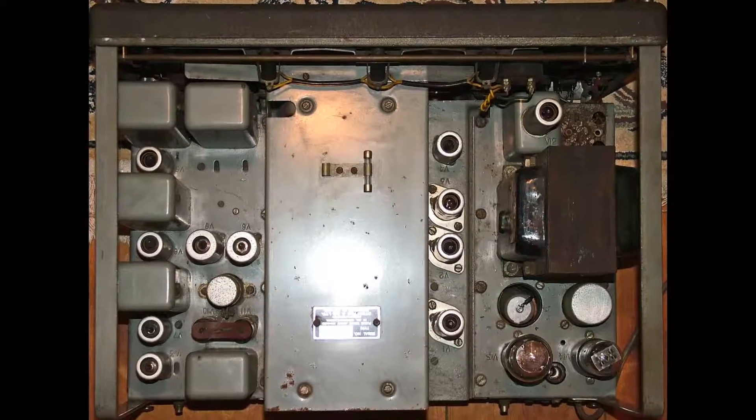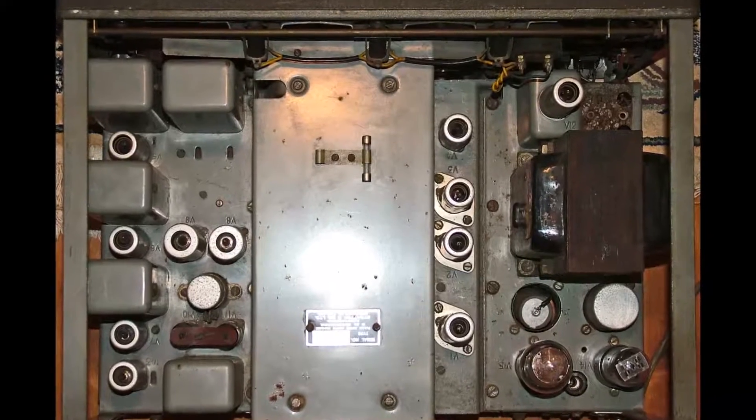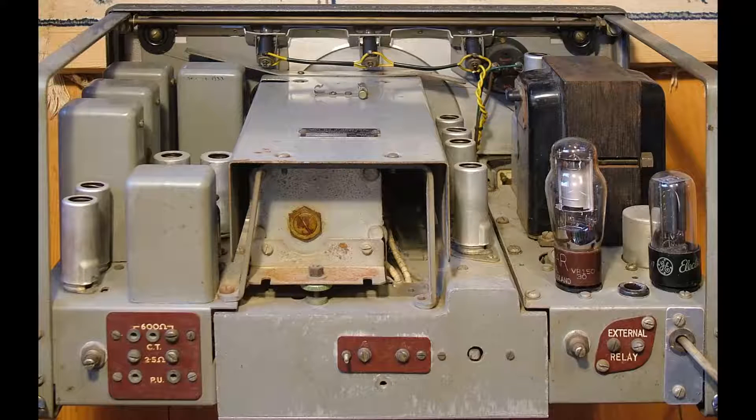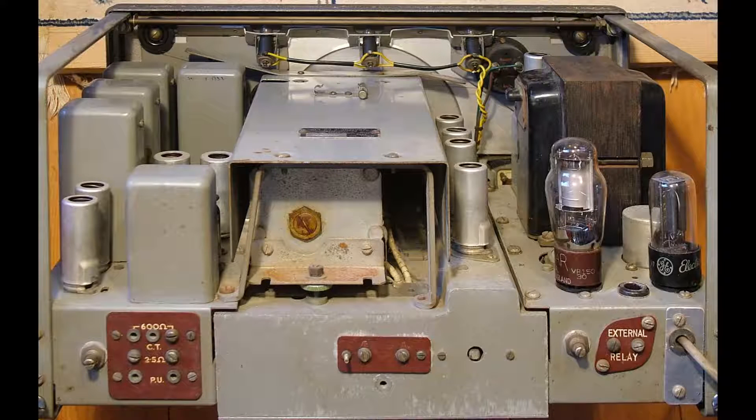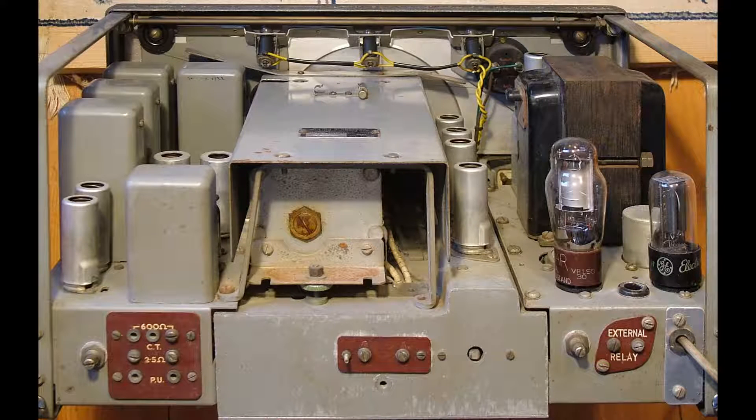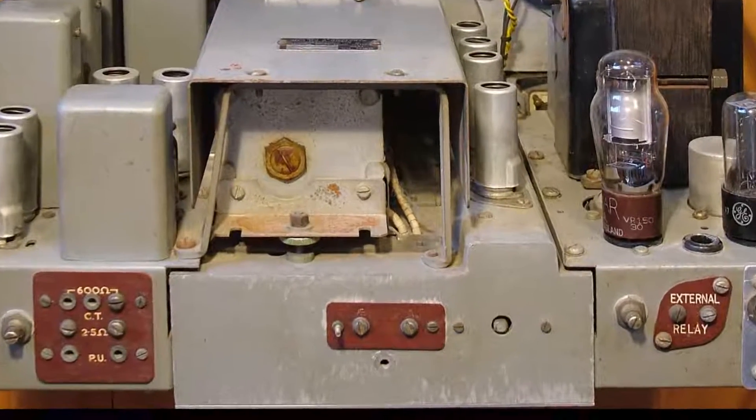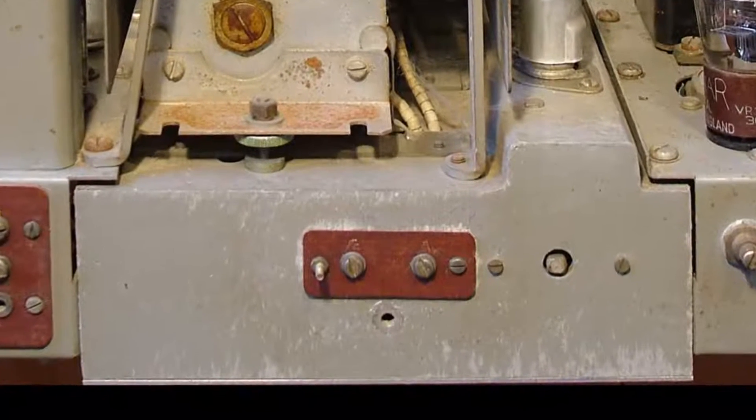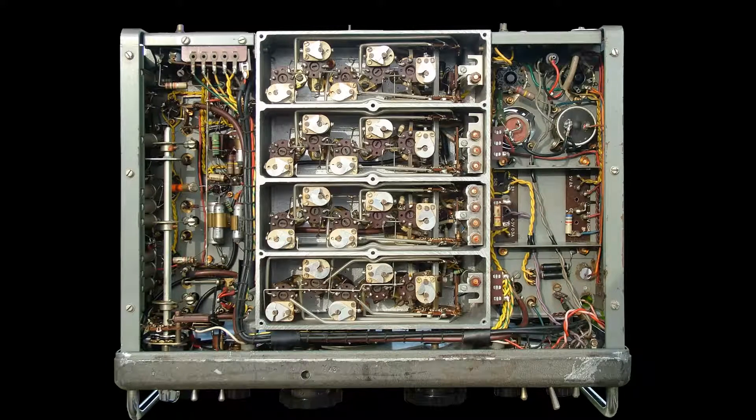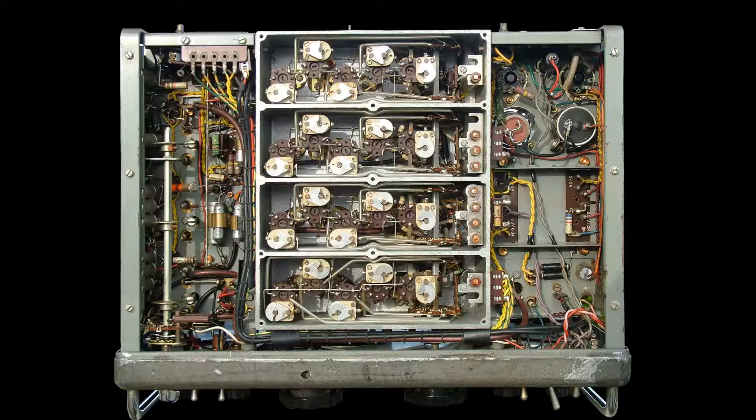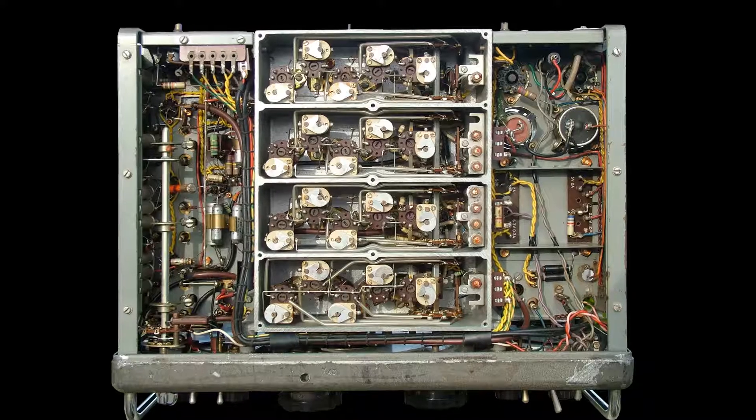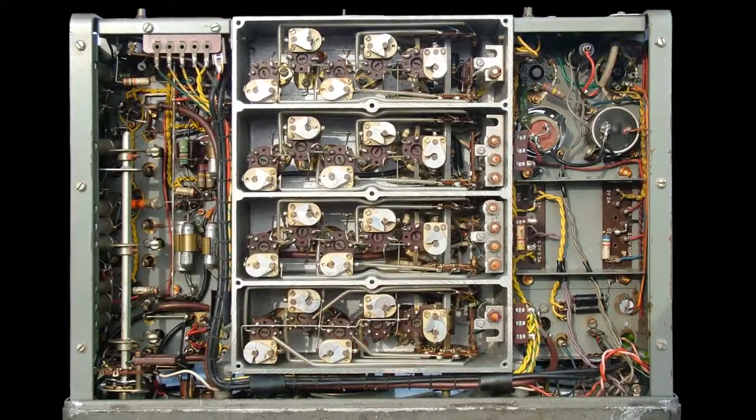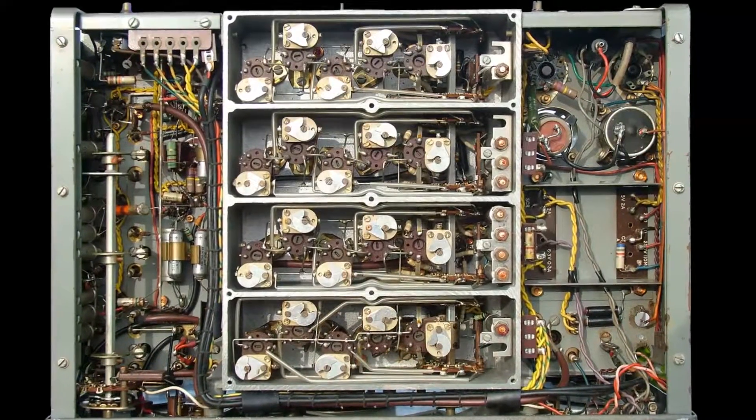It's a 15-valve communications receiver with very sturdy construction. The section in the middle there is a cast aluminium block that houses all of the sensitive tuning components. And again, on this under-chassis photograph of the equipment, you can see the cast aluminium box in the centre of the chassis.